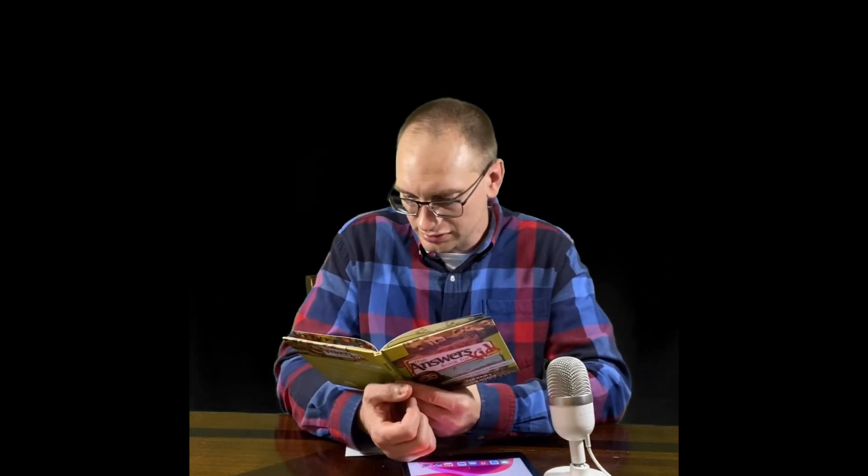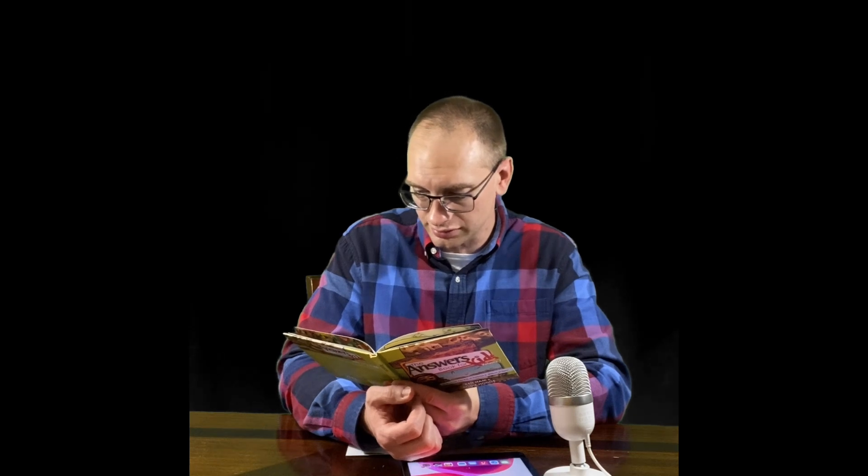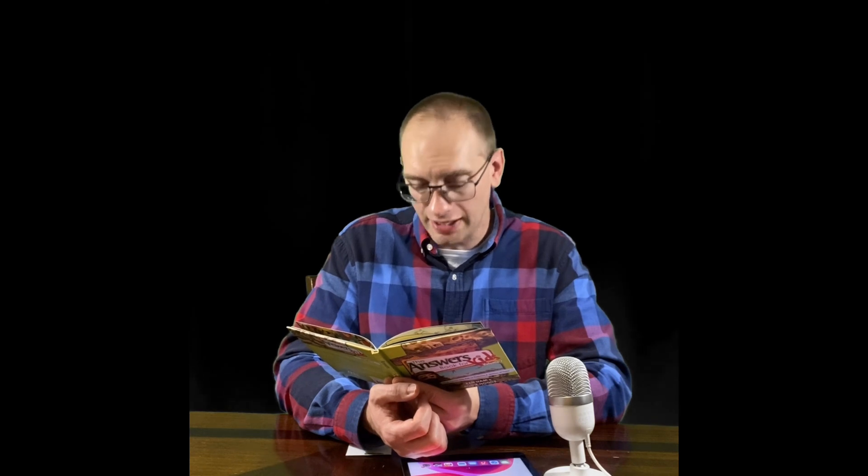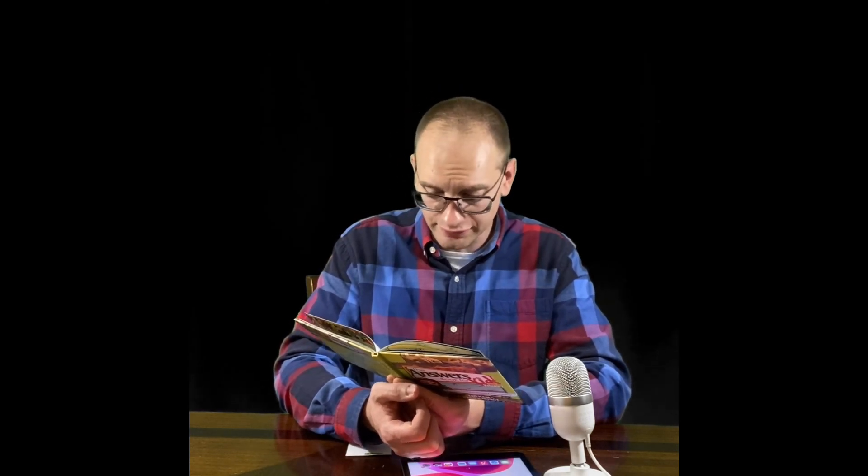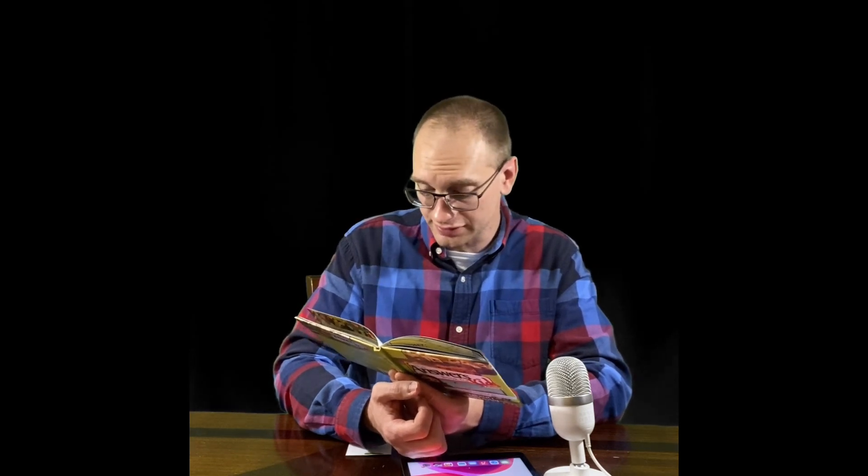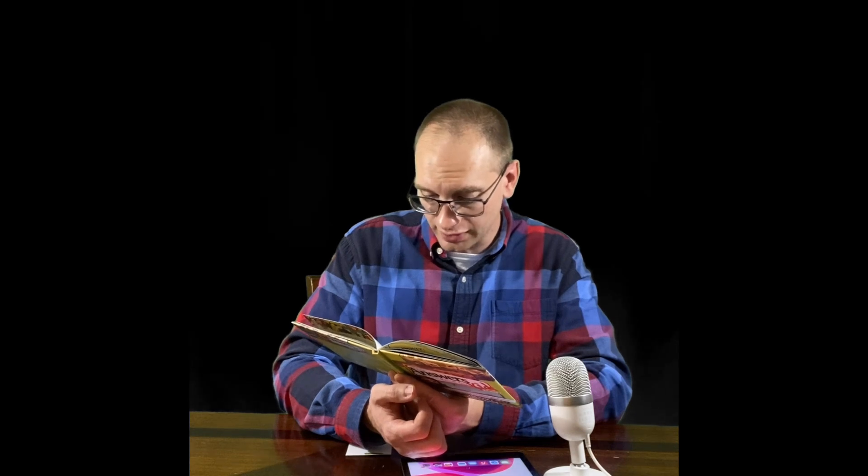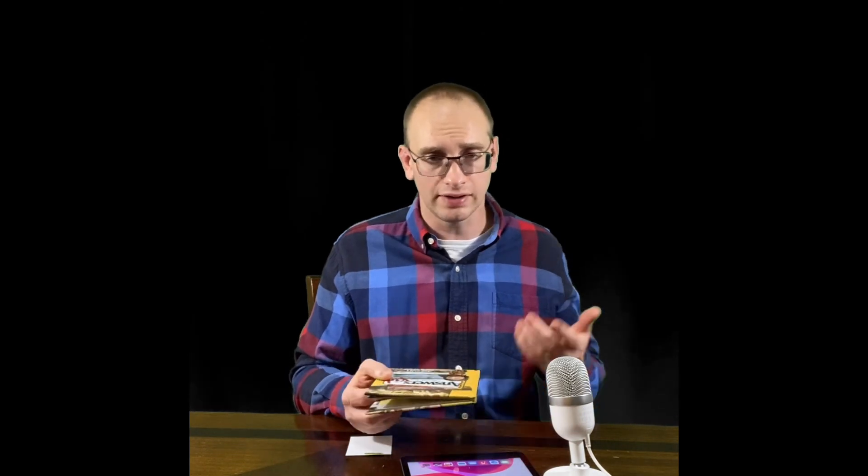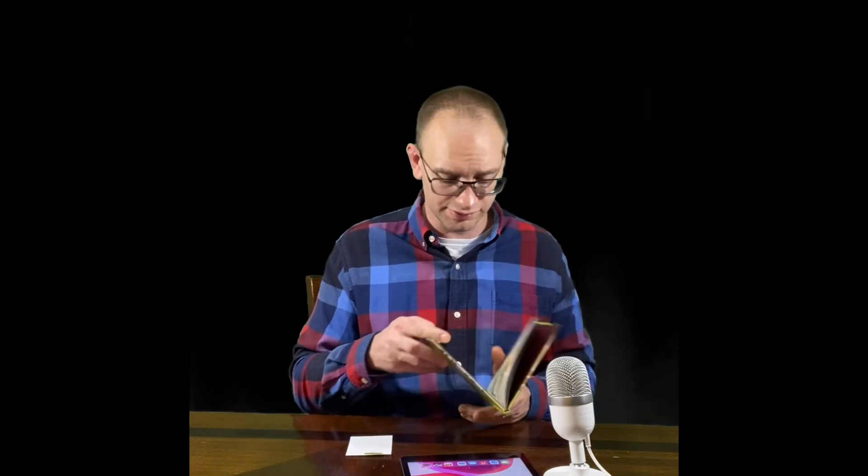It includes Bible verses even. At the top it says, Take heed to yourselves, lest your heart be deceived, and turn aside, and serve other gods and worship them. And then at the bottom of the page, I think this is very insightful. It informs the reader that the unrighteous want to be deceived. God permitted them to be deluded by a lie. Unless they repent, they will be judged. And so I thought that was very insightful that it's telling children that the unrighteous want to be deceived.